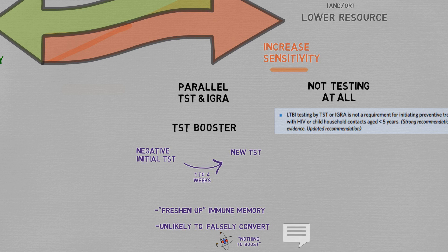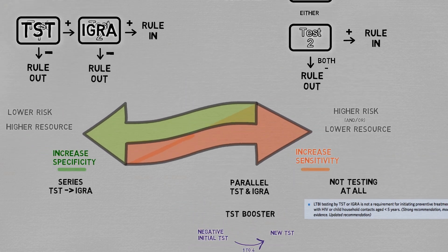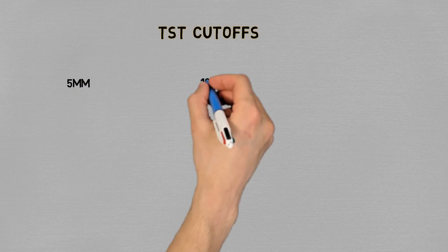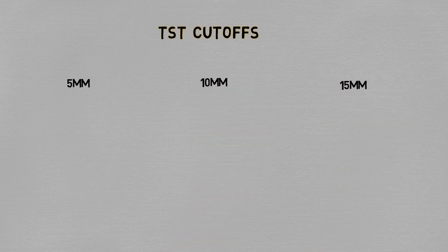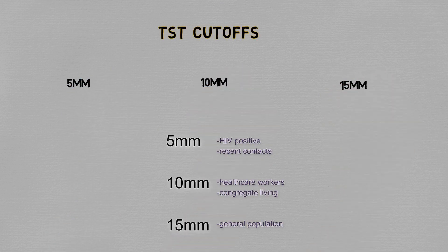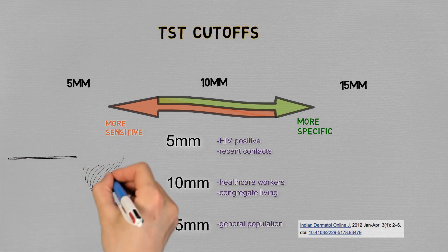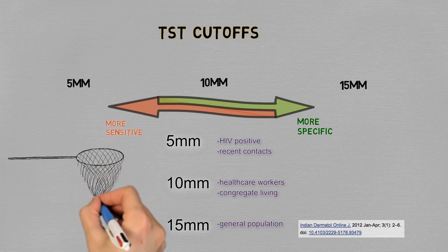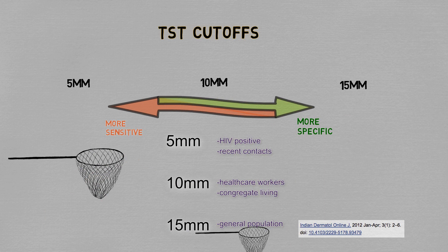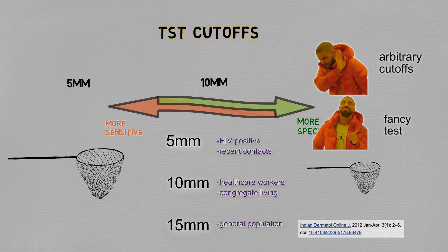Also regarding TST, there's the matter of whether to consider 5mm, 10mm, or 15mm as the cutoff for a positive reaction. In the past, this was used as a way to tune the test performance parameters according to different pre-test risk levels — being more lax about what counts as positive casts a wider net, gaining sensitivity but losing specificity. But now with the increased availability of IGRA as a confirmatory test, this approach is kind of falling out of favor.